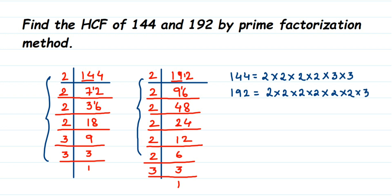Now we circle the factors that are common to both numbers. The first 2 is in both, the second 2 is in both, the third 2 is in both, and the fourth 2 is in both. The fifth and sixth 2s in 192 don't have matching 2s in 144, so we can't take those as common. For 3: one 3 is common to both. The second 3 in 144 has no matching 3 in 192, so it's not taken as common.